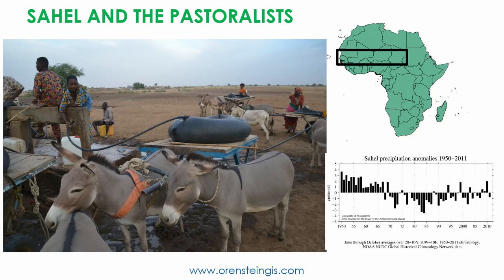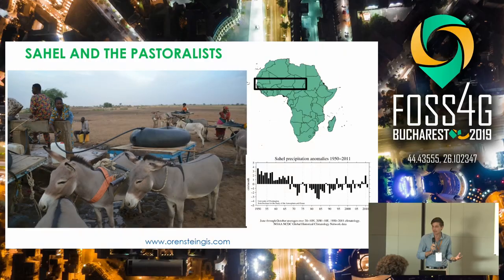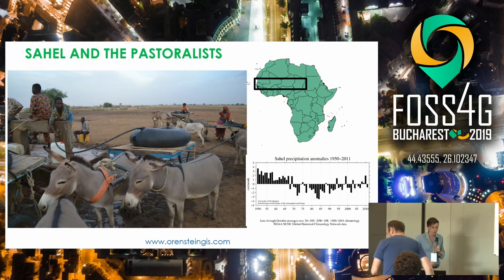Here we see a family filling up an inner tube with water to bring back to their herds. The appearance of naturally occurring water and pasture is of critical importance to herders. They have to move with the seasons and migrate their cattle and all of their livestock to find pasture and water. If they can't find pasture and water, this leads to starvation of animals and loss of livelihoods.